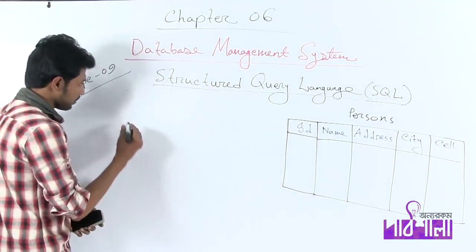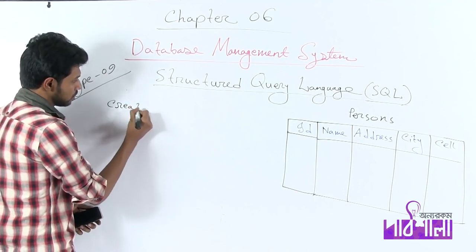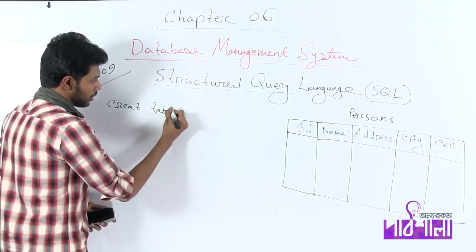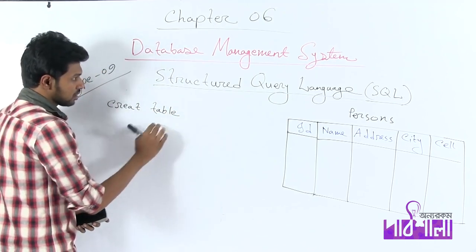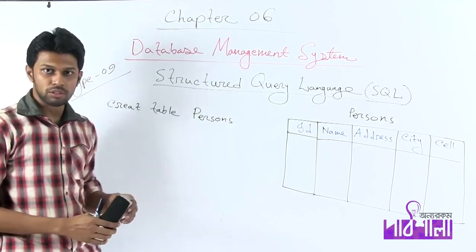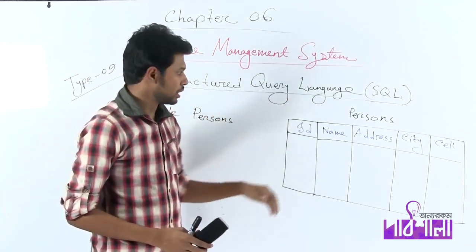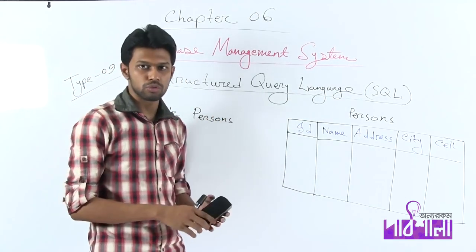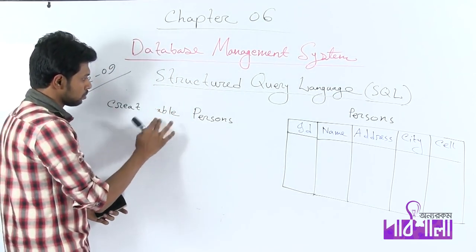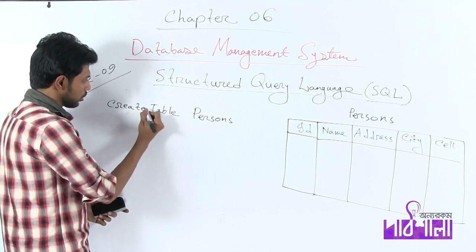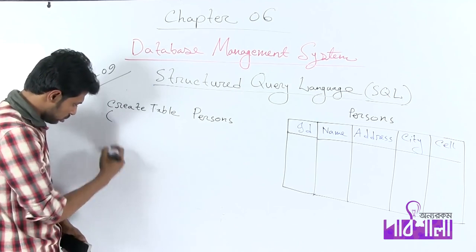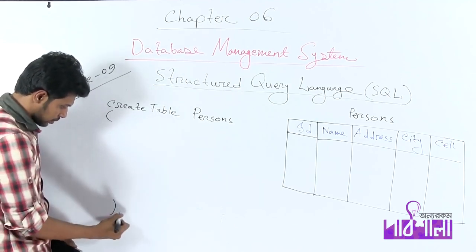The table is called persons. We use the CREATE TABLE statement. Create table, persons, first bracket start, first bracket is 6, semi-column.